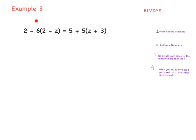This is the last question for today: 2 minus 6 multiplied by (2 minus z) equals 5 plus 5 multiplied by (z plus 3). We need to start with the brackets first. Why can't we do 2 minus 6 or 5 plus 5 first? Look at the BIDMAS rule — multiplication goes before addition and subtraction. So first, always work out the brackets. So we expand: 6 by 2 and 6 by minus z on the left, and 5 by z and 5 by 3 on the right.